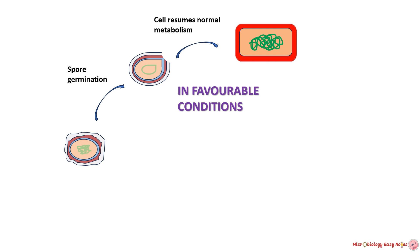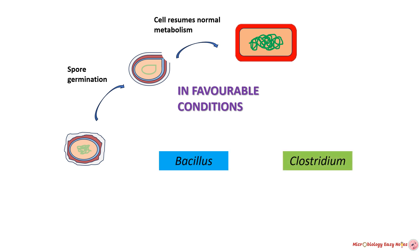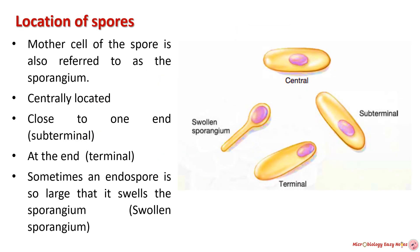It is important to note that not all bacteria are capable of forming spores. Sporulation is a specialized process found primarily in certain genera such as Bacillus and Clostridium. The mature endospore is located in a characteristic location in the mother cell depending on the species of bacteria.